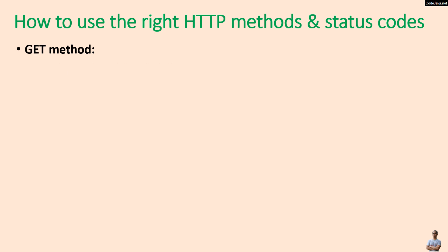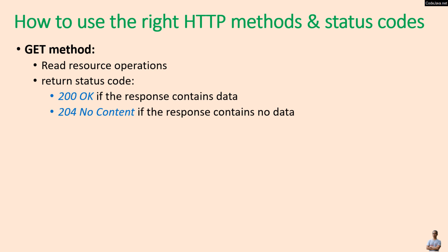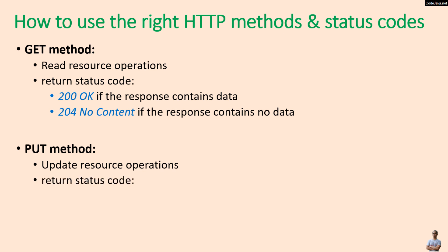You should use the HTTP GET method mainly for read resource operations and return one of the following status codes: 200 OK if the response contains data, or 204 No Content if the response contains no data. You should use the HTTP PUT method mainly for update resource operations and return 200 OK if the response contains data.